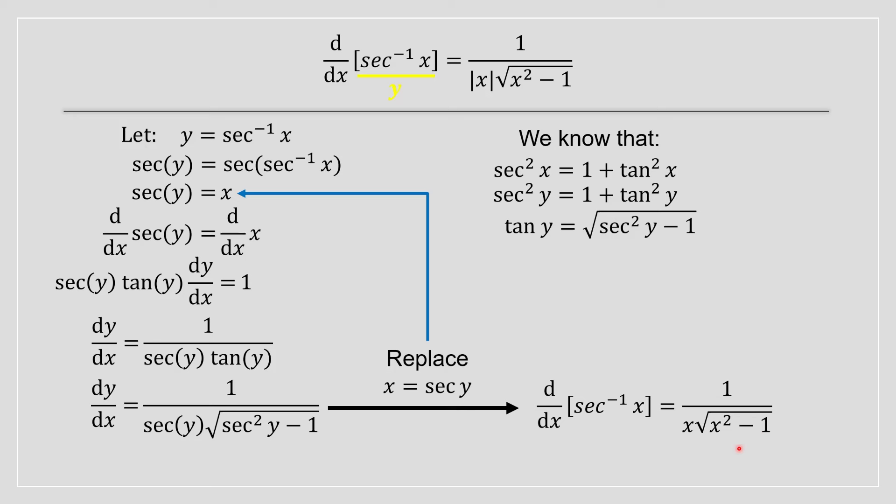But we're not done yet. There's an additional step. If we look at what we're trying to prove, we've got an absolute value here, and we don't have it in our answer. So why is there an absolute value? When you open a lot of textbooks, they already have this derivative solved for you, but why is there an absolute value? Let me explain why that is.